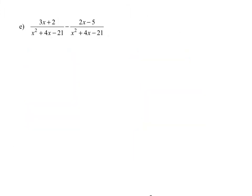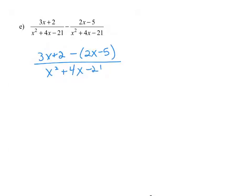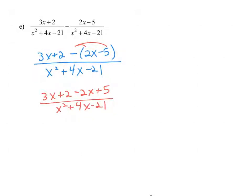We can subtract these two fractions because we have a common denominator. So we take the numerator 3x plus 2 and subtract the entire numerator 2x minus 5, all over the common denominator of x squared plus 4x minus 21. Distributing the negative gives us 3x plus 2 minus 2x plus 5 in the numerator. Combining like terms: 3x minus 2x is x, and 2 plus 5 is 7, over the denominator x squared plus 4x minus 21.